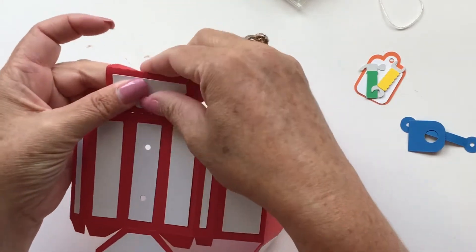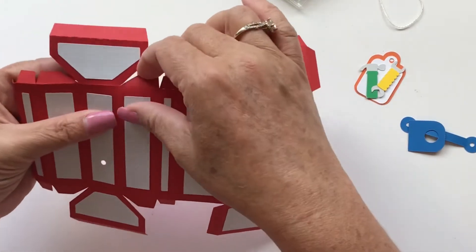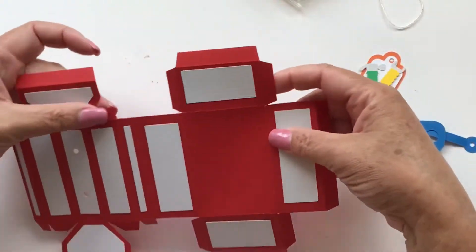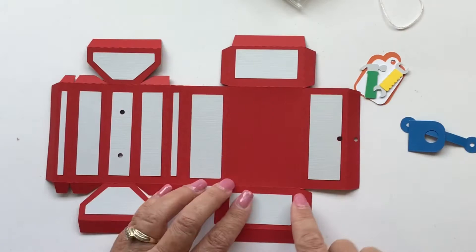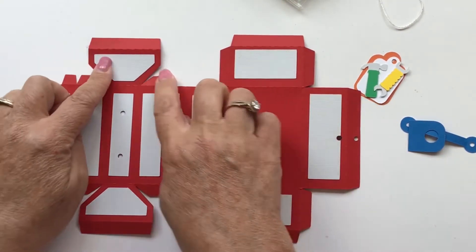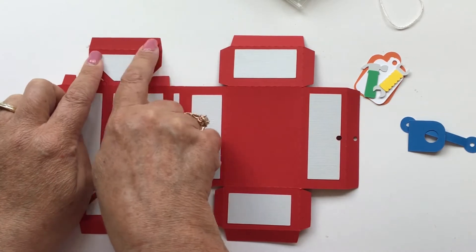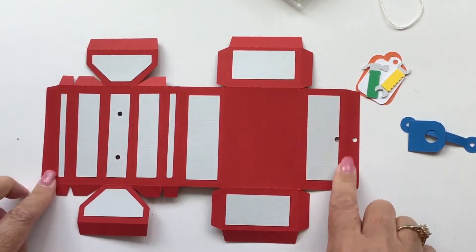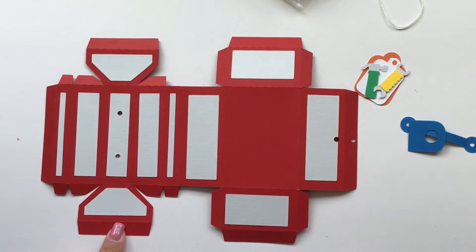Once we get all of these pieces folded down the way that we want to, we want to put glue on these tabs right here, so on the edges. And yeah, on the edges there's these little tabs and those actually go inside the box. And I'll show that to you in just a second.